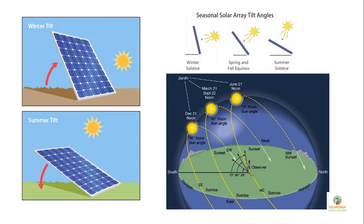If you are using a fixed structure, it is recommended to use a tilt angle nearly equal to your latitude. If you have a sun tracking system, that's the best option to keep your solar panels always facing the sun.